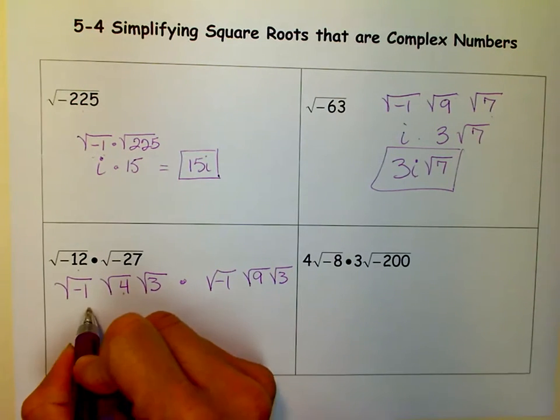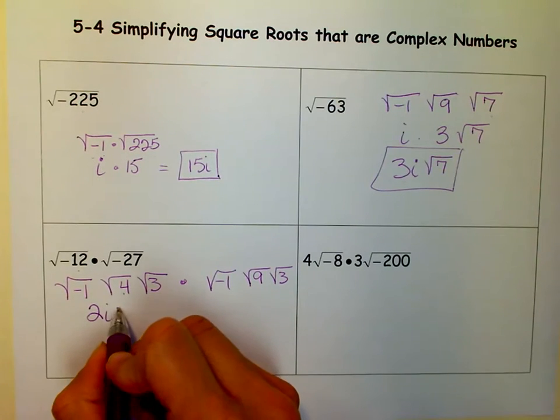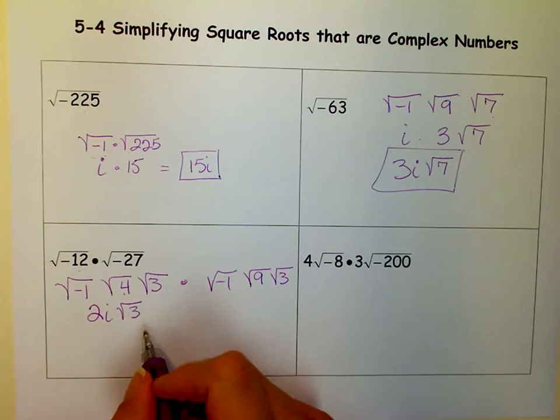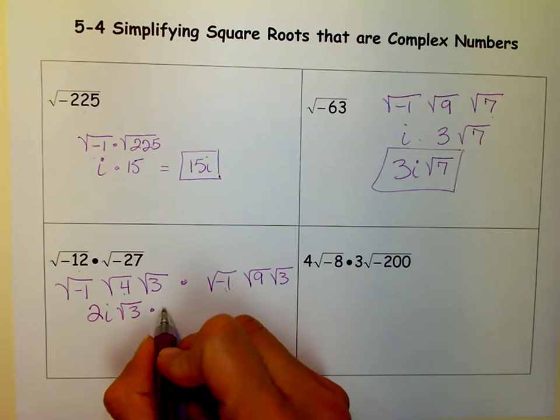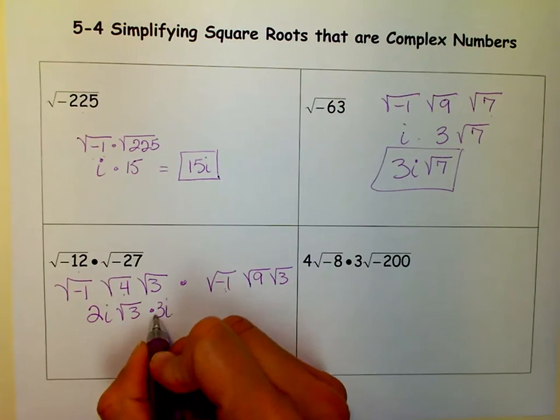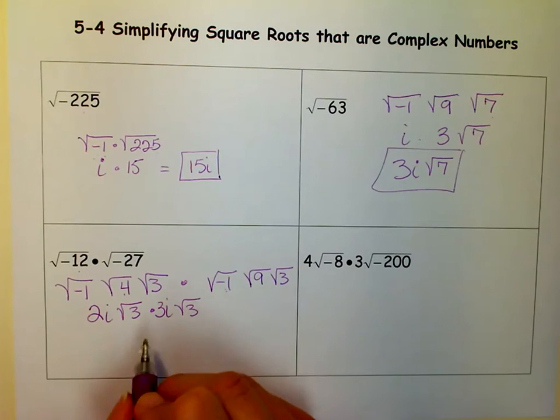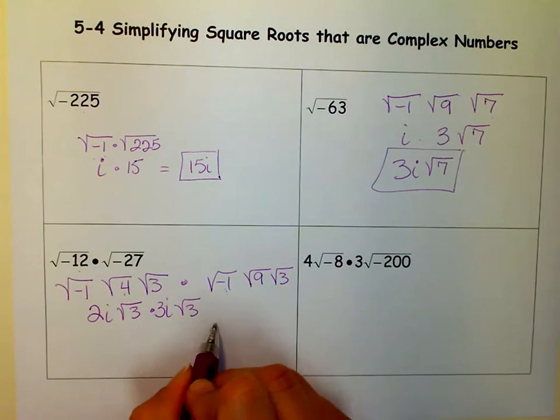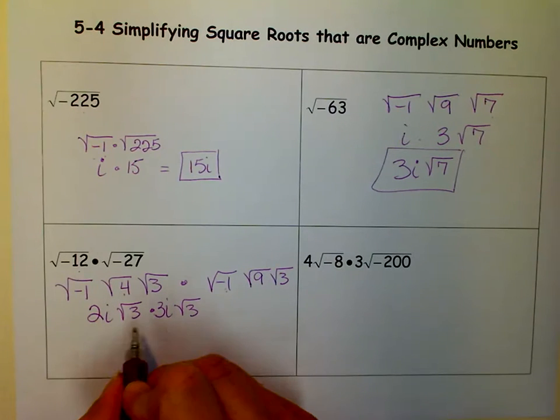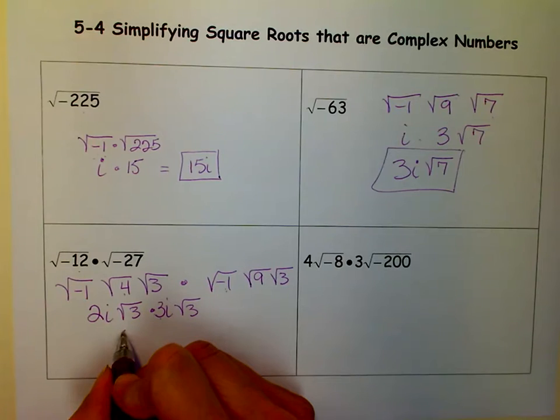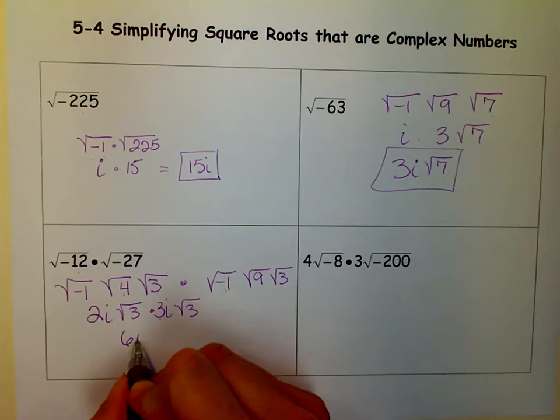The square root of 4 is 2. The square root of negative 1 is i. And 3 is prime. And then the square root of negative 1 is i. The square root of 9 is 3. And then I have a square root of 3. But since it's multiplied, I can multiply outsides times outsides and insides times insides. So I have 2 times 3, which is 6. i times i, which is i squared.